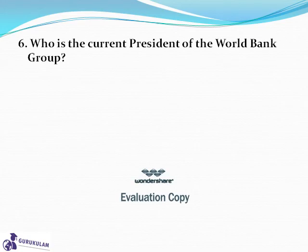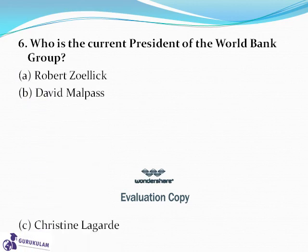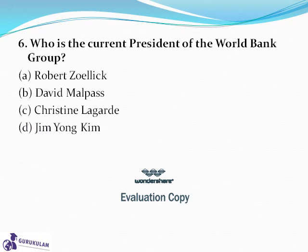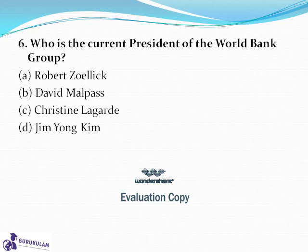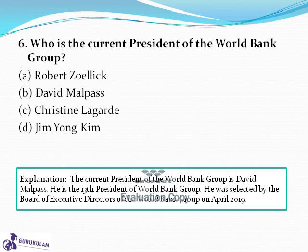Question 6: Who is the current president of the World Bank Group? Options: Robert Zolik, David Malpass, Christine Lagarde, or Jim Yong Kim. A helpful trick: World Bank provides loans — that is money, or 'Mal' in Hindi. So David Malpass is the correct answer. He is the 13th president of the World Bank Group, selected by the board of executive directors in April 2019.